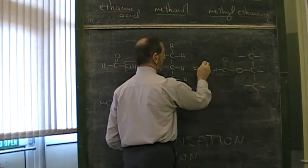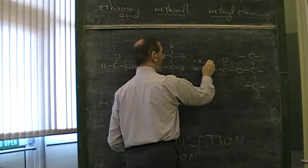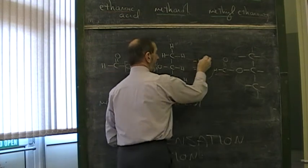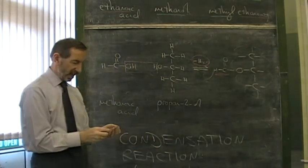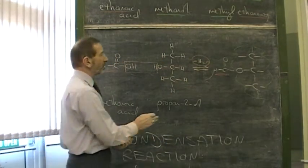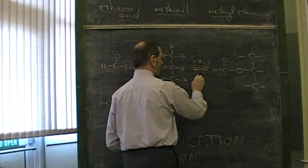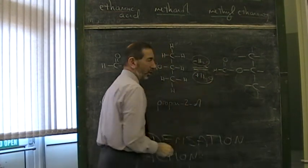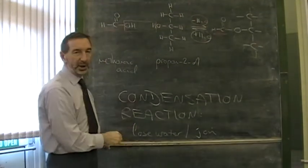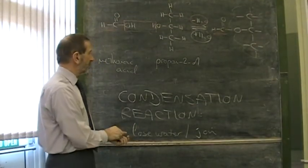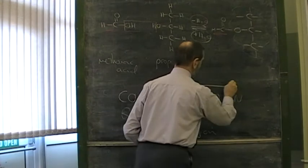So what would the reverse process be? Well, if making an ester involves removing water, then it follows that the reverse process would involve adding water or replacing the water. So to go back the way, we need to add water.